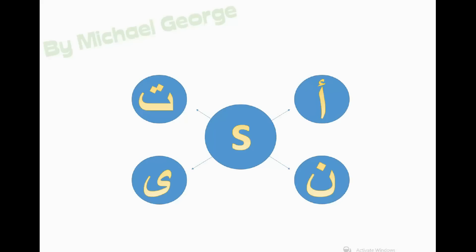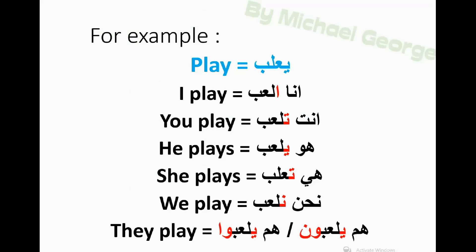For example, يلعب means 'play'. I play means أنا ألعب. You play means أنت تلعب. He plays — for example, play means يلعب.